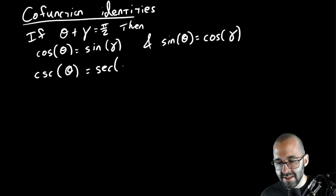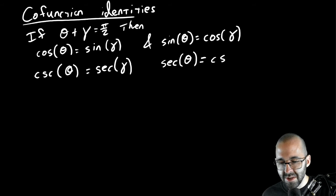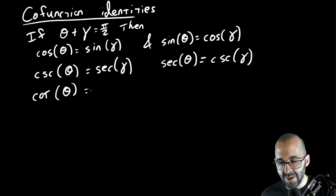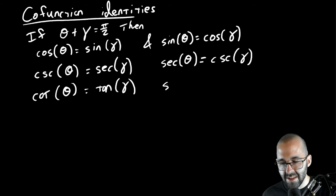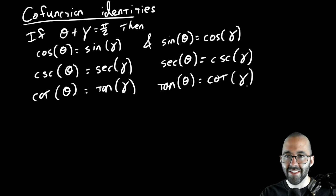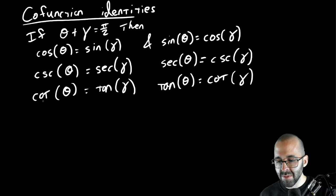Cosecant and secant, secant and cosecant. And let's do all of them right now, let's just write them all down. Cotangent and tangent, tangent and cotangent. All right, so that's all the co-function identities.